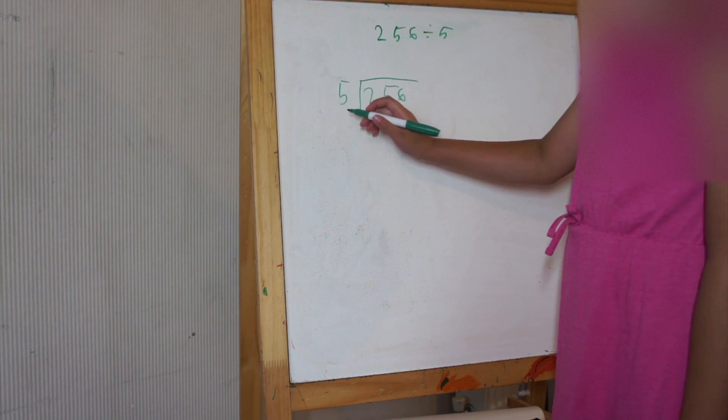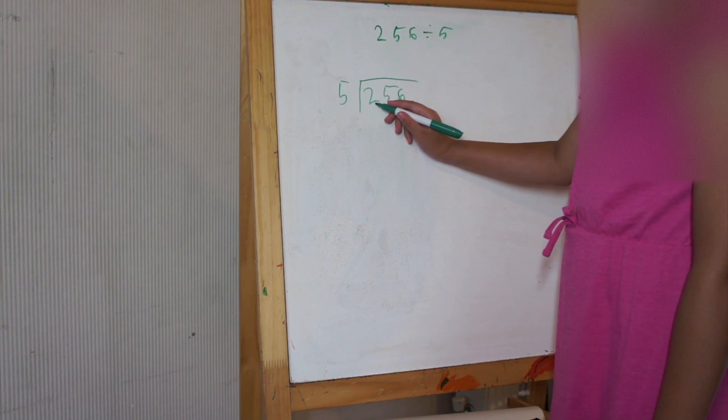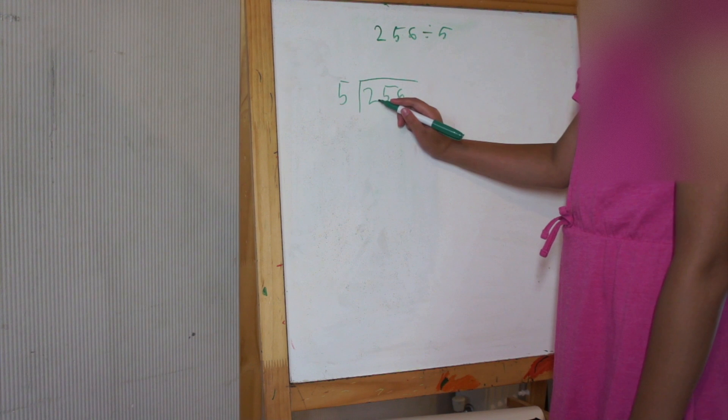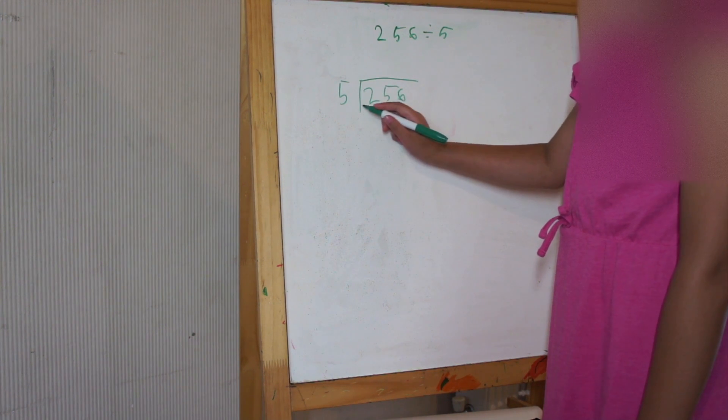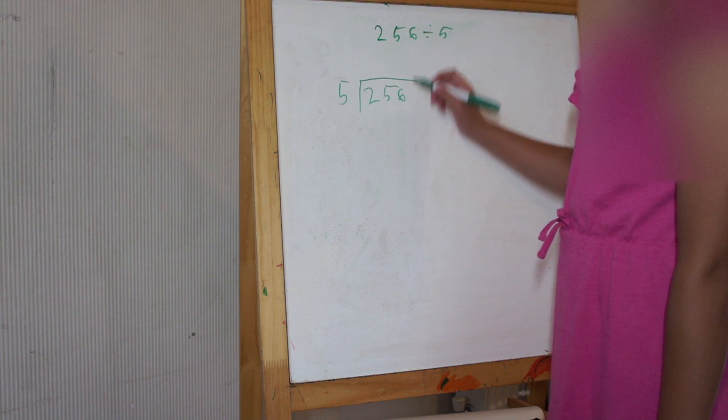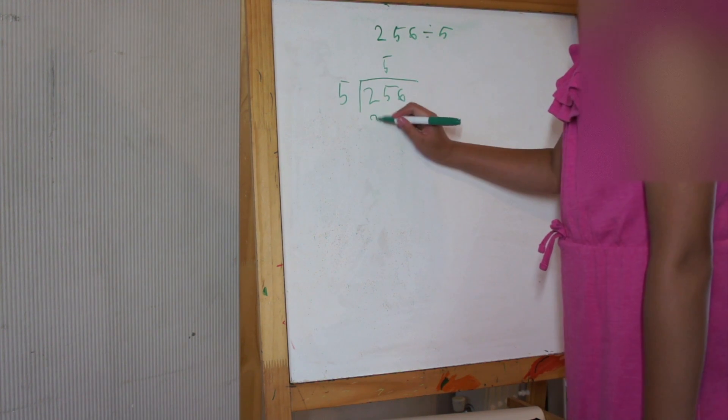So, 5 times what equals 2? 5 is bigger than 2, so we add on the 5, so that makes 25. And then 5 times what equals 25? 5 times 5 equals 25.